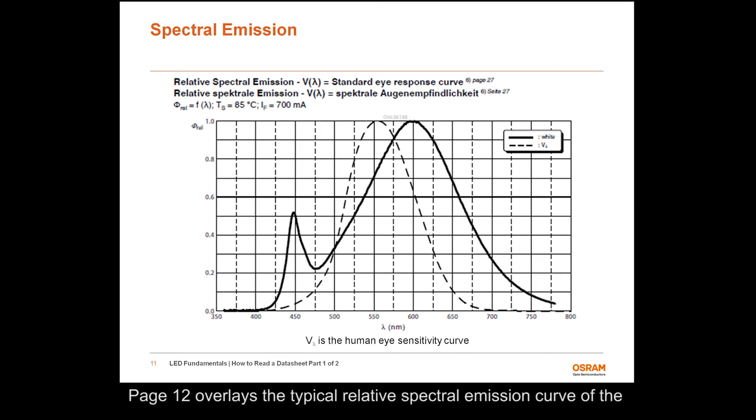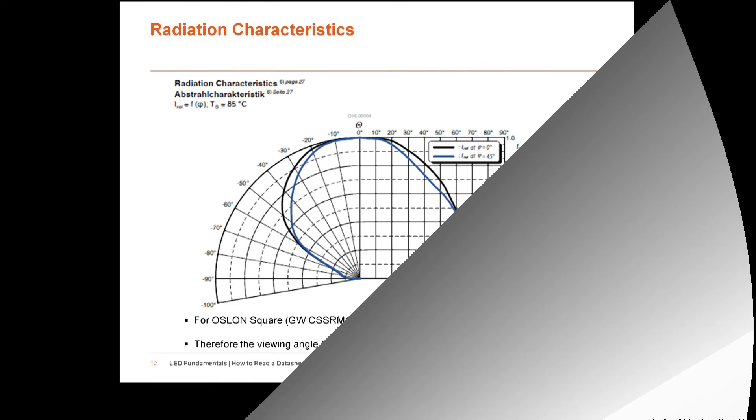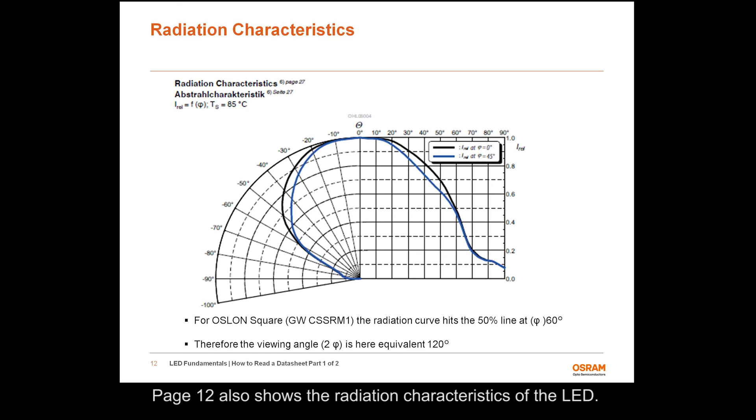Page 12 overlays the typical relative spectral emission curve of the LED at the solder point temperature of 85 degrees C and binning current of 700 milliamps on the human eye response curve. The x-axis is the wavelength given in nanometers, and the y-axis is the relative radiant power given in arbitrary units. Page 12 also shows the radiation characteristics of the LED. The angle where the luminous intensity decreases to 50% of the maximum is defined as the viewing angle for the LED. For the Aslan Square, the radiation curve hits the 50% line at an angle of 60 degrees. Therefore, the viewing angle is 120 degrees.